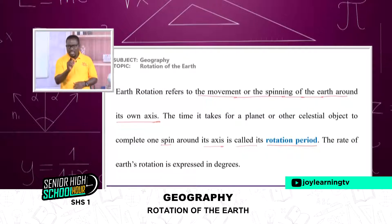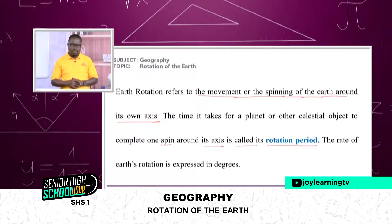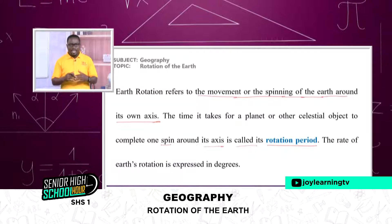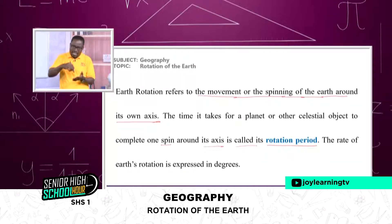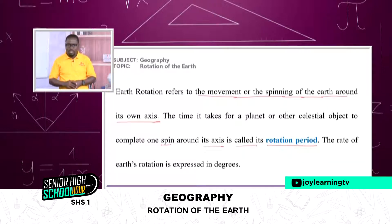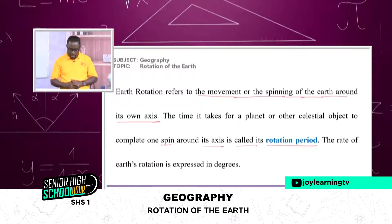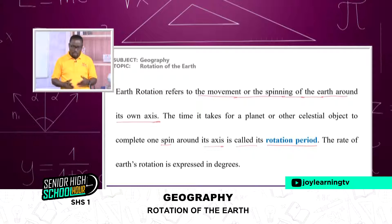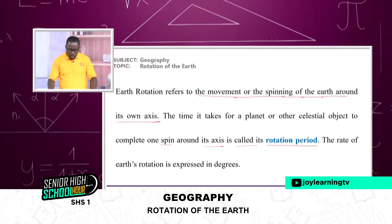Don't forget that even the sun also spins. It doesn't go anywhere—it spins on its axis. It's stationary but goes around at the same place. As for clockwise or anti-clockwise, as we move along, you're going to know. The rate of earth's rotation is expressed in degrees.